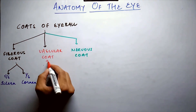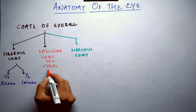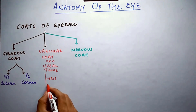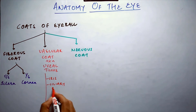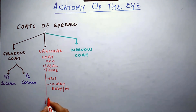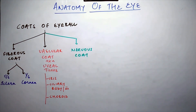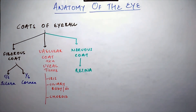The vascular coat is also known as the uveal tissue, and it comprises three parts from anterior to posterior: the iris anteriorly, the ciliary body or ciliary muscles in the middle, and the choroid posteriorly. The nervous coat consists of the single sensory layer, the retina, where the image is formed.